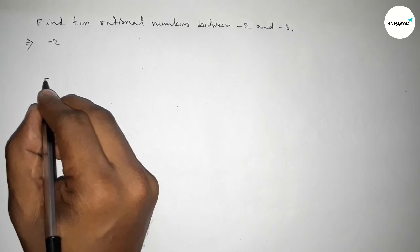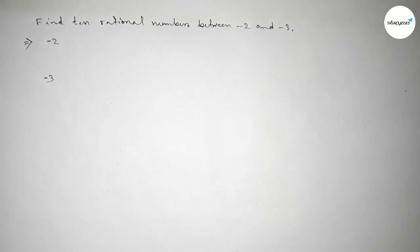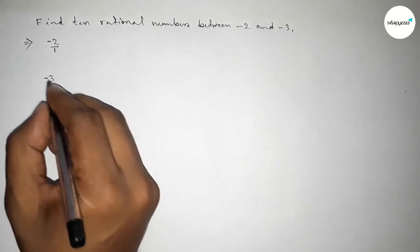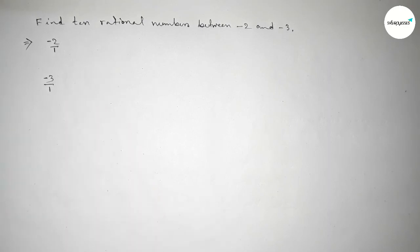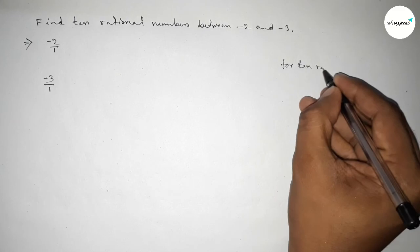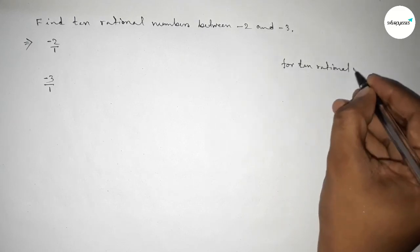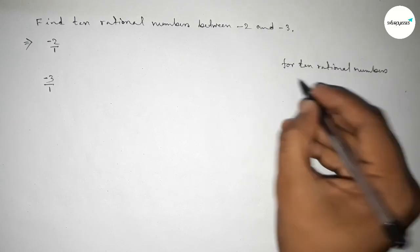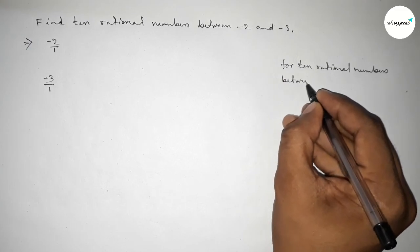Minus 2 and minus 3. Now we can write minus 2 as minus 2 over 1, minus 3 over 1. Okay, now roughly discussing the method. So for finding 10 rational numbers between any two numbers, we have to follow this method.